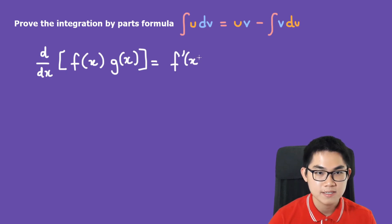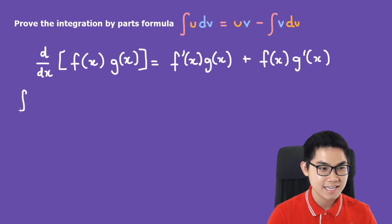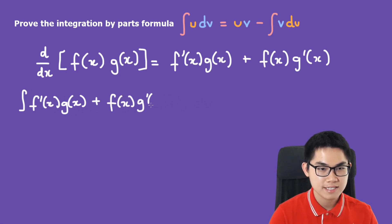When you differentiate f(x) times g(x), what you get is f'(x) times g(x) plus f(x) times g'(x). This also means that the integral of f'(x)g(x) plus f(x)g'(x) dx is equal to f(x) times g(x).